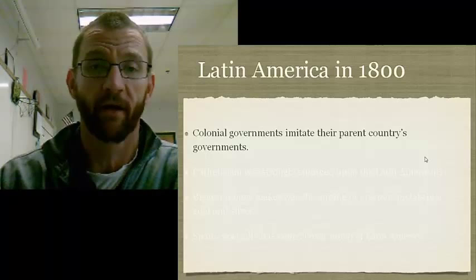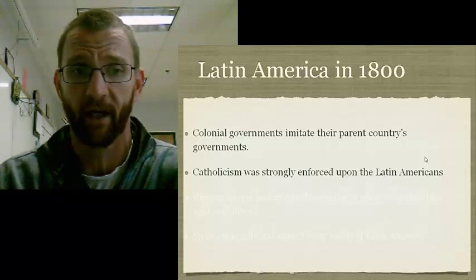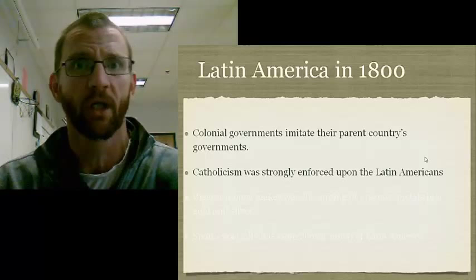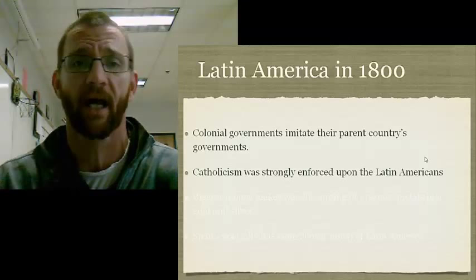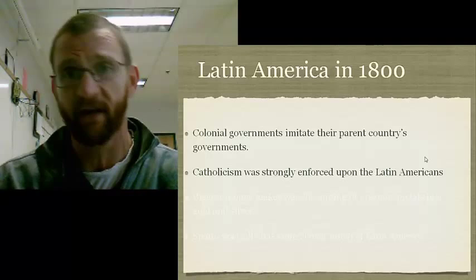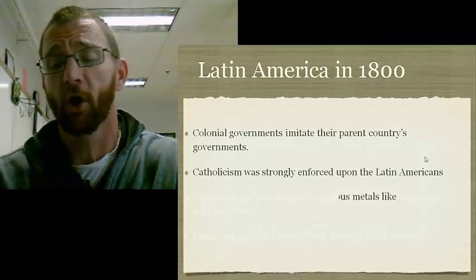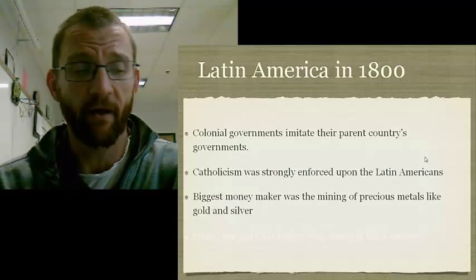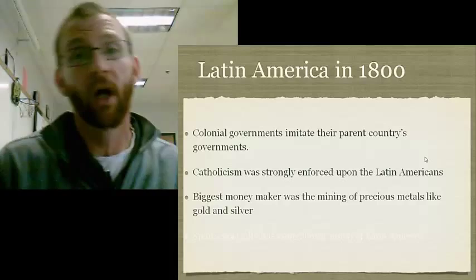They structured their government just like their parent government. Catholicism was strongly enforced — there really wasn't an option. The areas that were colonized were all colonized by Catholic countries, and Catholicism was one of the ways they sought to control the native populations, the slave population, and pretty much all of society. The biggest moneymaker was mining precious metals like gold and silver. That's what gave a lot of the countries their wealth and their power.